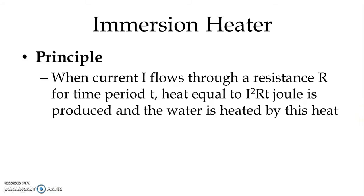Let us study the principle of the immersion heater. When current I flows through a resistance R for time period T, heat equal to I²RT joules is produced and the water is heated by this heat. This is the very basic principle of resistive heating we use for the immersion type of heater.